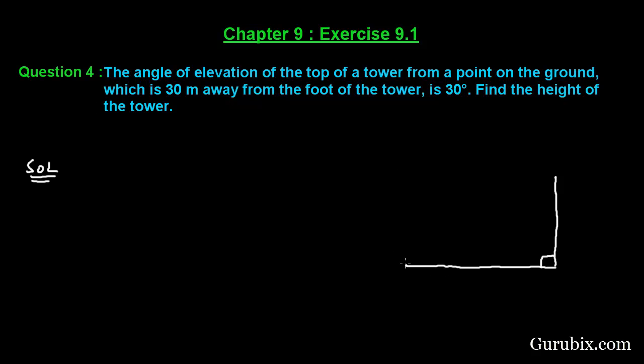We are told that the angle of elevation of the top of the tower is 30 degrees. And then we have to find the height of the tower. So let the height of the tower be h meters. This is A, this is B, this is C.